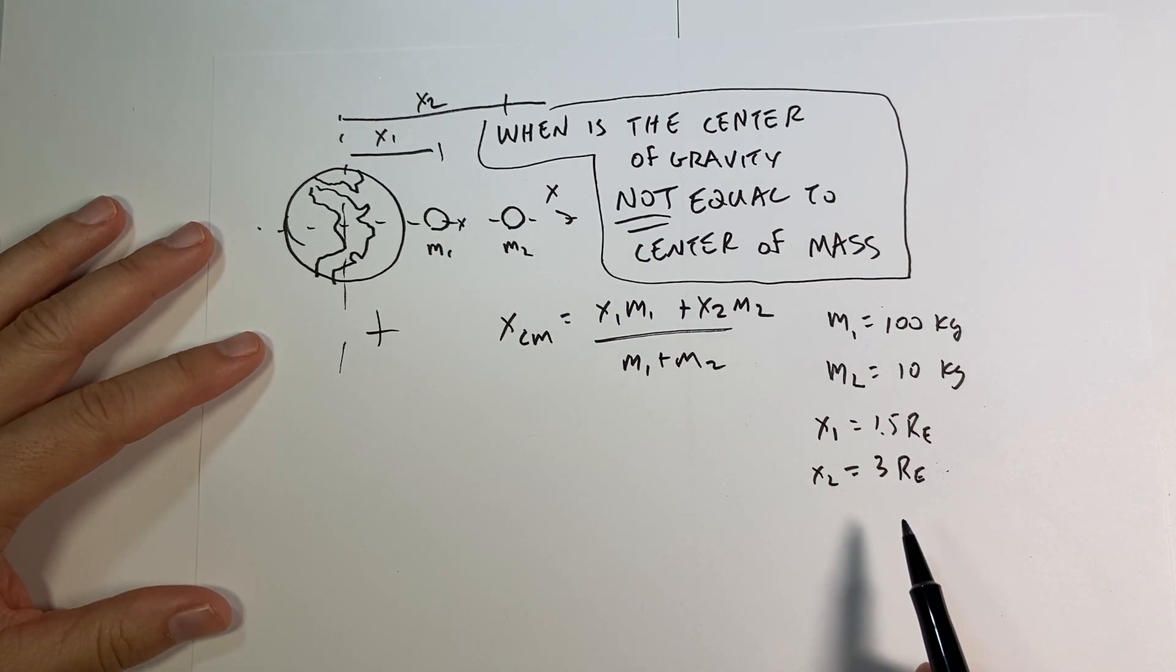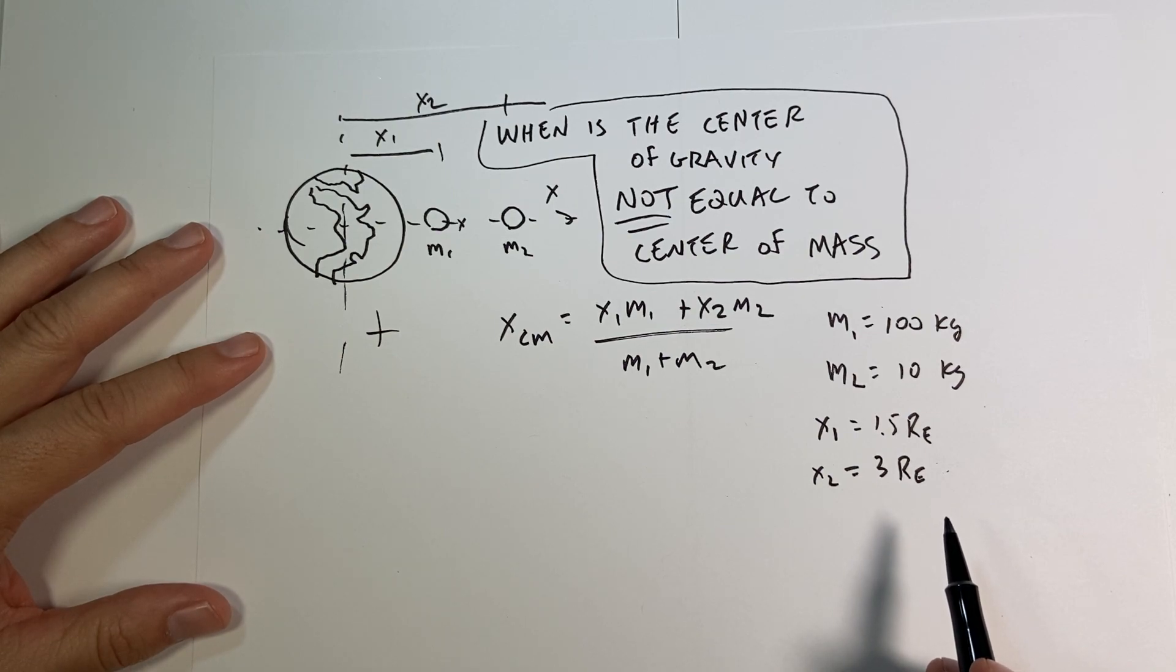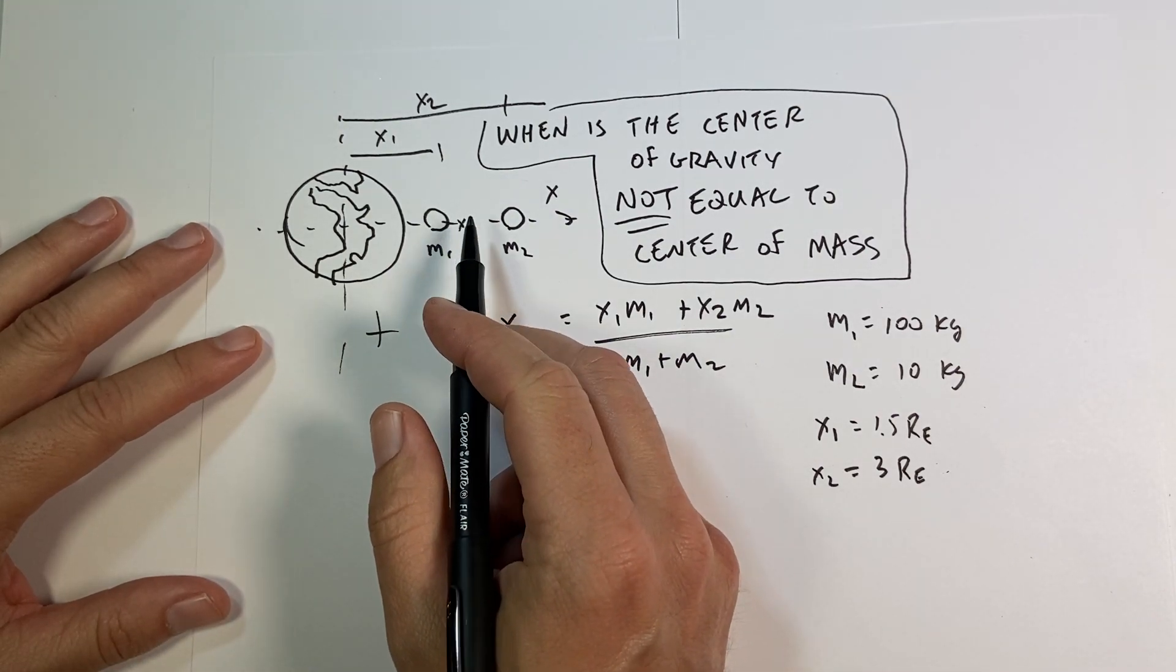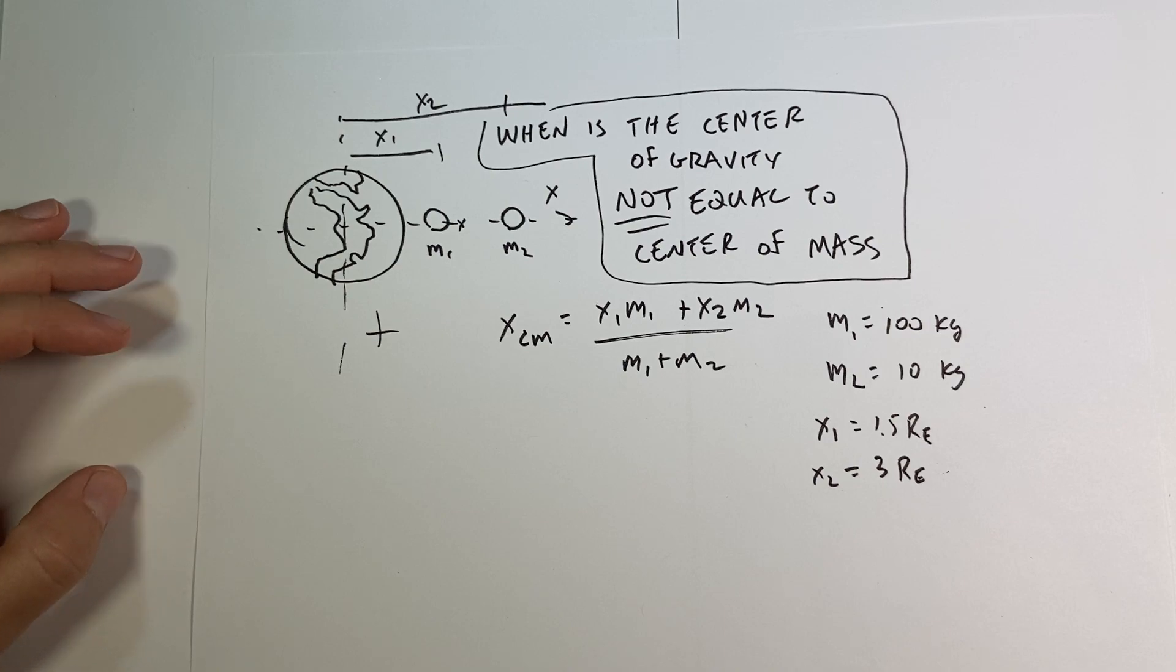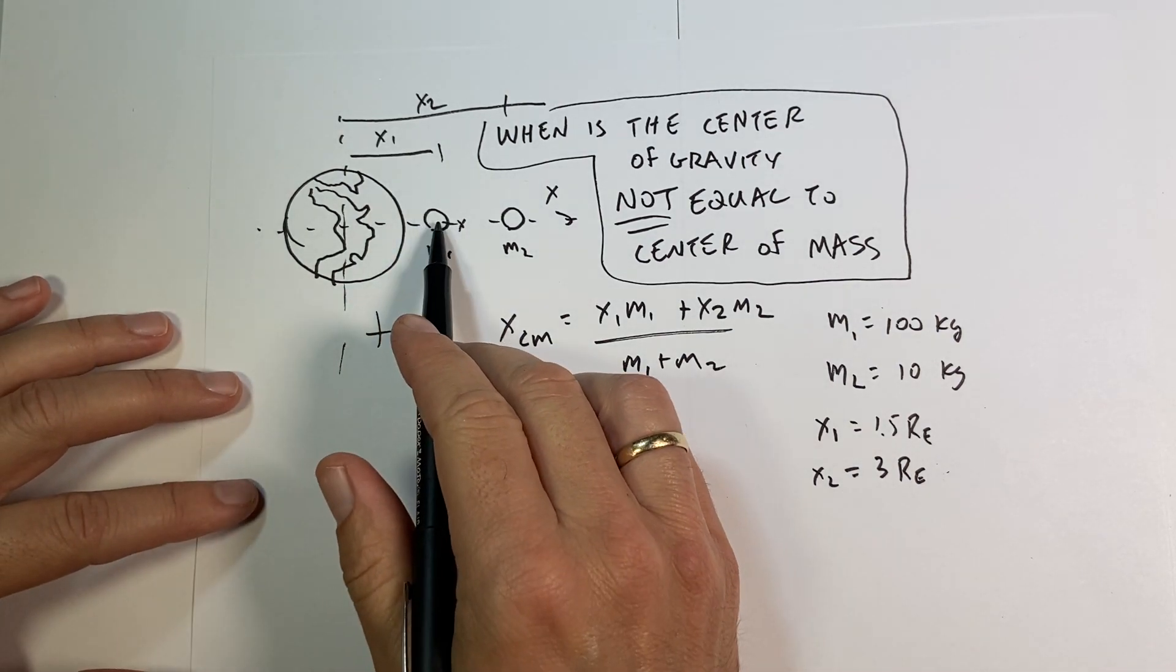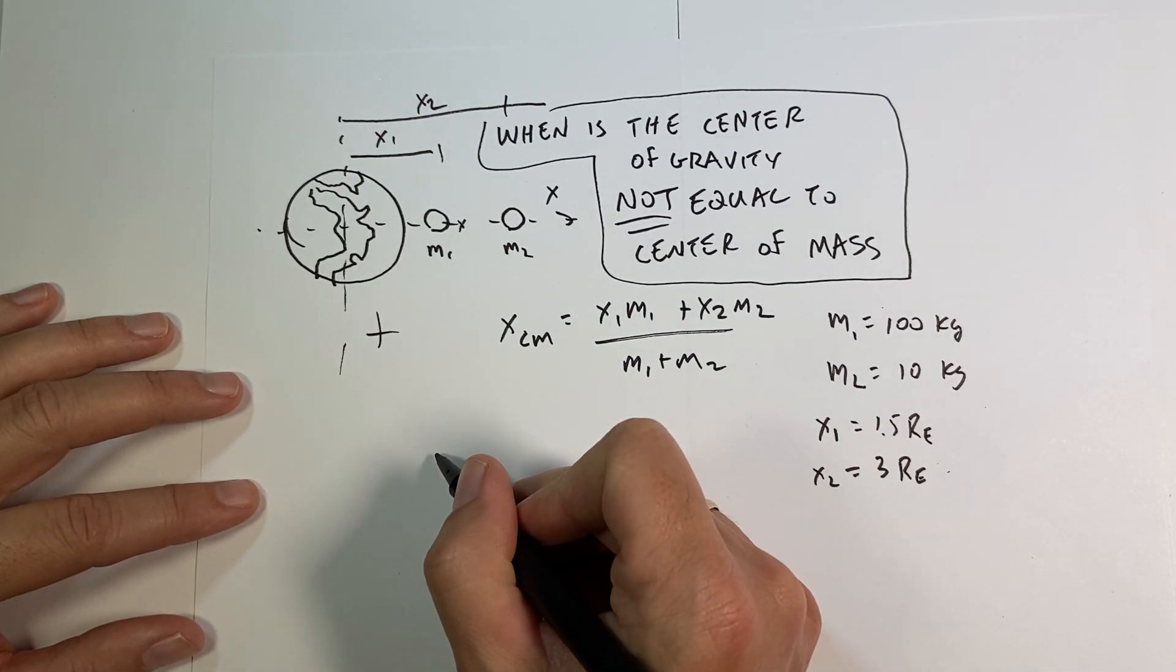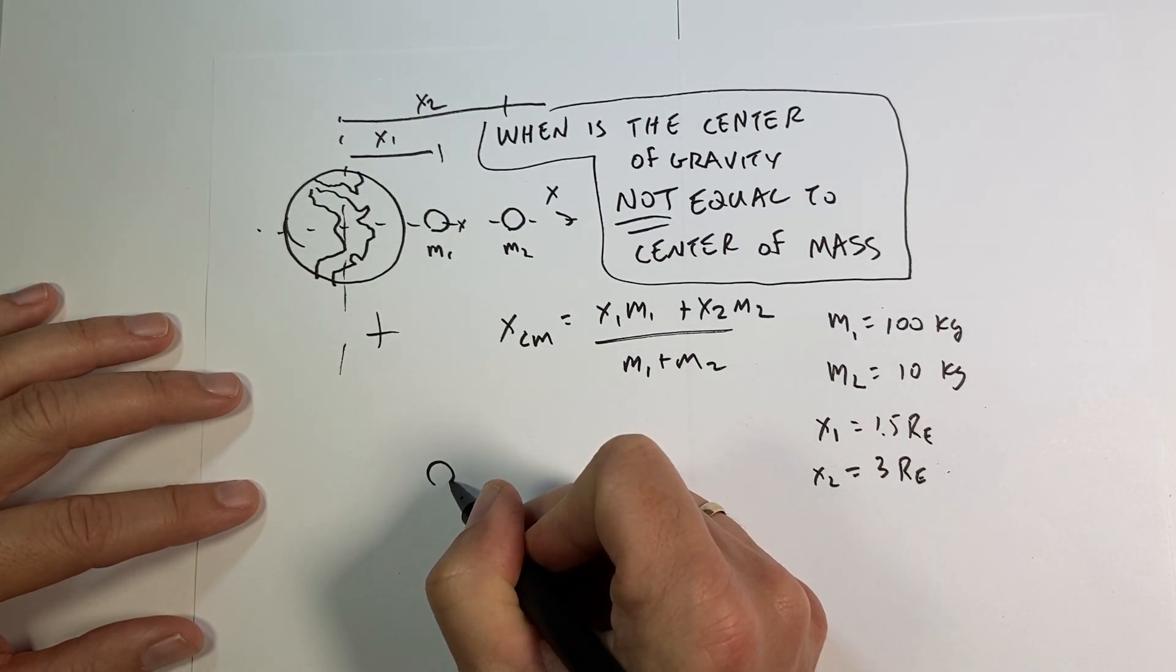Now, what if I want to calculate the center of gravity? The center of mass is done. The center of gravity is going to be the one spot where I could place a force that would be the equivalent of the two gravitational forces. Now let me just draw here—I'm not going to actually calculate it, I'm going to show you that it's going to be different.